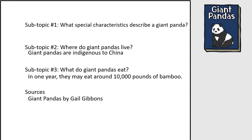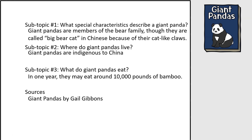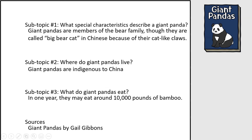As I continue to look through this source, I found more facts that were related to my subtopics. I also typed those out and saved them on my document. Now I have at least one fact in each one of my subtopics. I'm going to need more space though, because I'm going to need at least six facts in each subtopic, which totals to 18 facts. So you're going to need plenty of space.